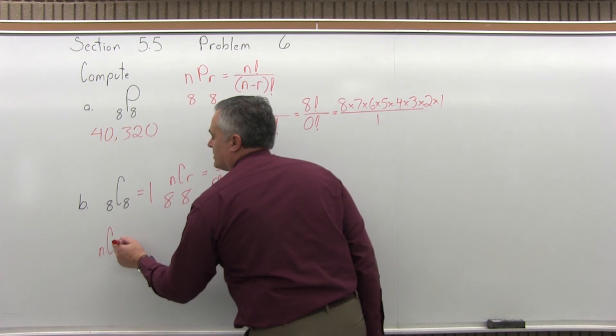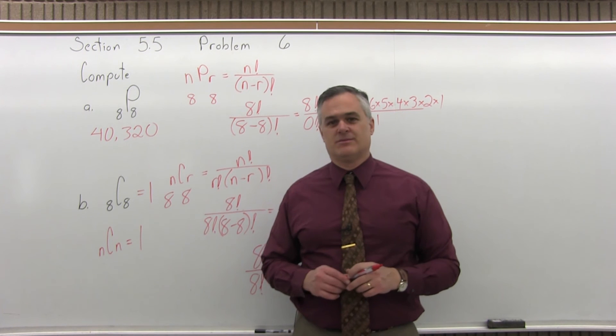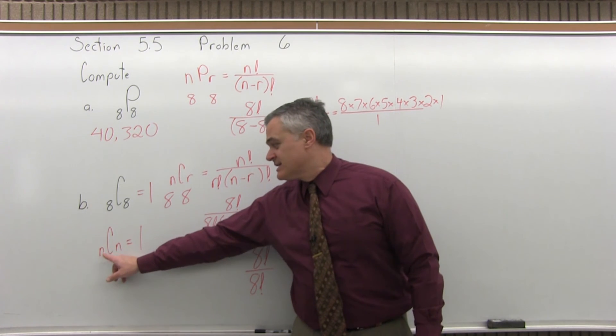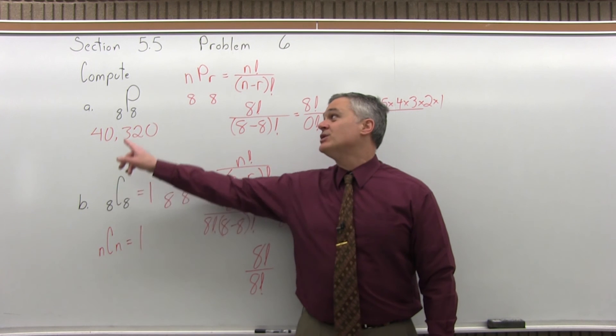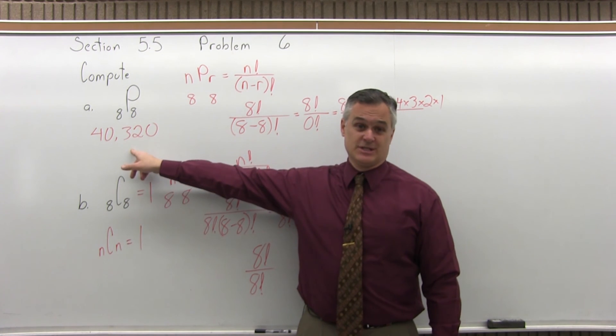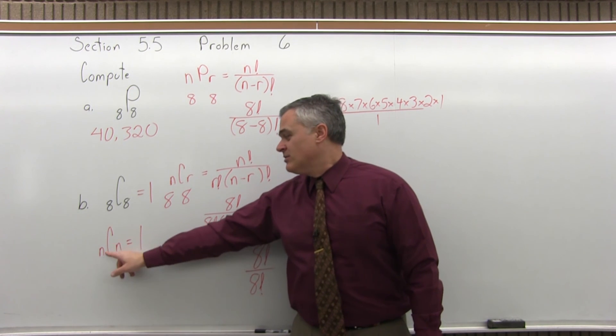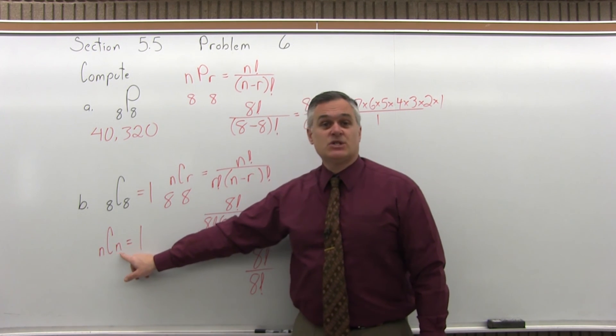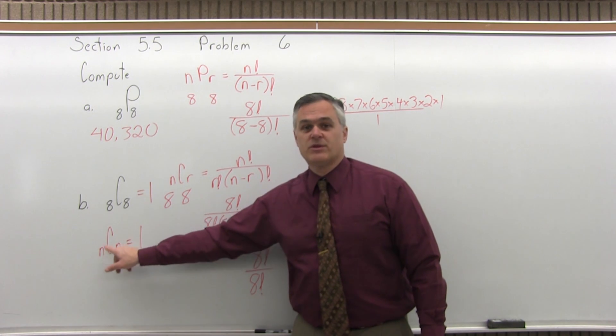Now, that brings up a cool shortcut. Whenever the two numbers match for combination, the answer will be 1. Whatever the number is, as long as it's the same, the first number and the second number, the answer is 1. That's not the case for permutation, as you can see. But for combination, it is. So, let's say 85 combination 85. I know the answer is 1 because it's the same number for both N and R.